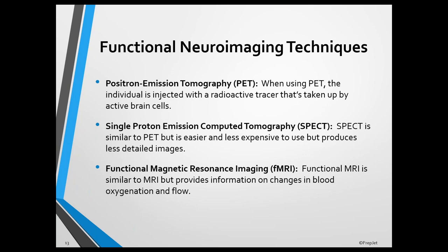Functional neuroimaging techniques provide information about brain structure and indirect information on neuronal activity by assessing regional cerebral blood flow, oxygen consumption, or glucose metabolism.